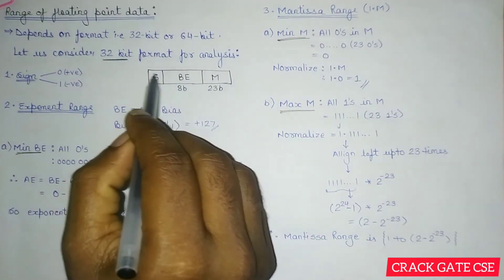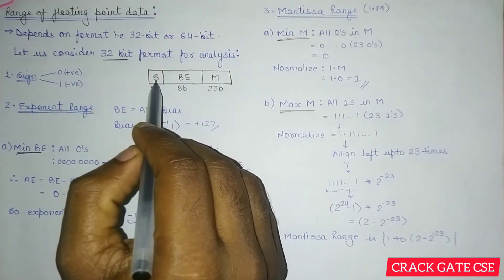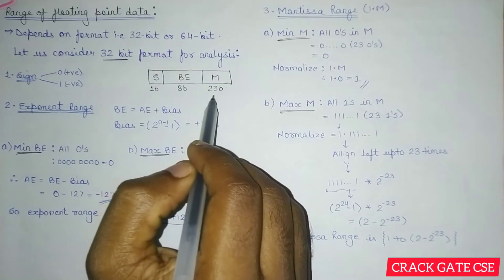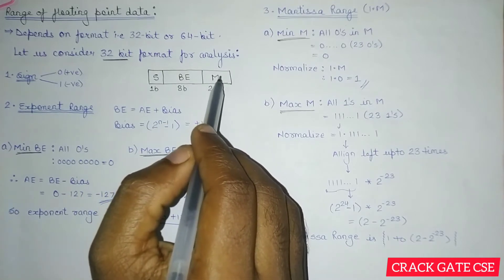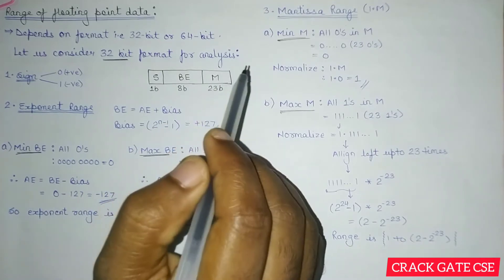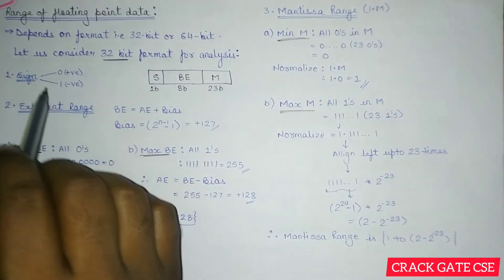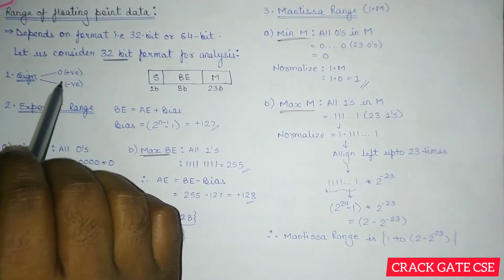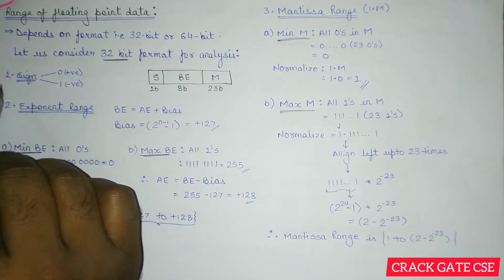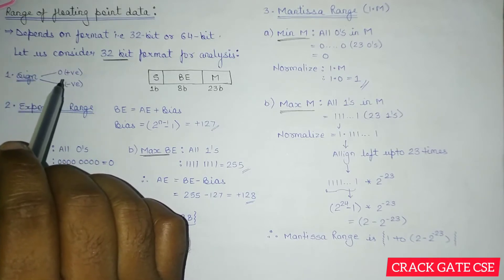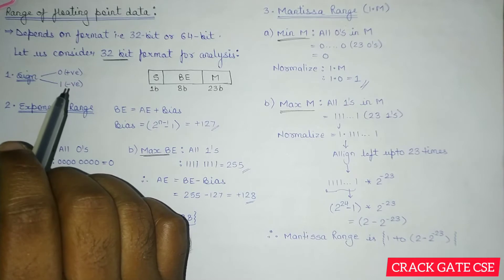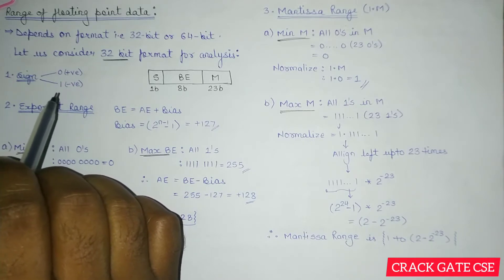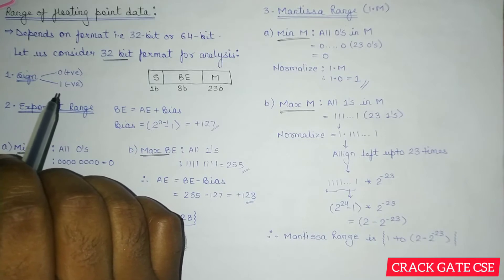In the 32-bit format, one bit is reserved for the sign, 8 bits are reserved for the biased exponent, and 23 bits are reserved for the mantissa, which is nothing but the fraction part. The sign bit can be either 0 or 1 — positive or negative — and will not be considered as a range; it just indicates which side the value lies on.